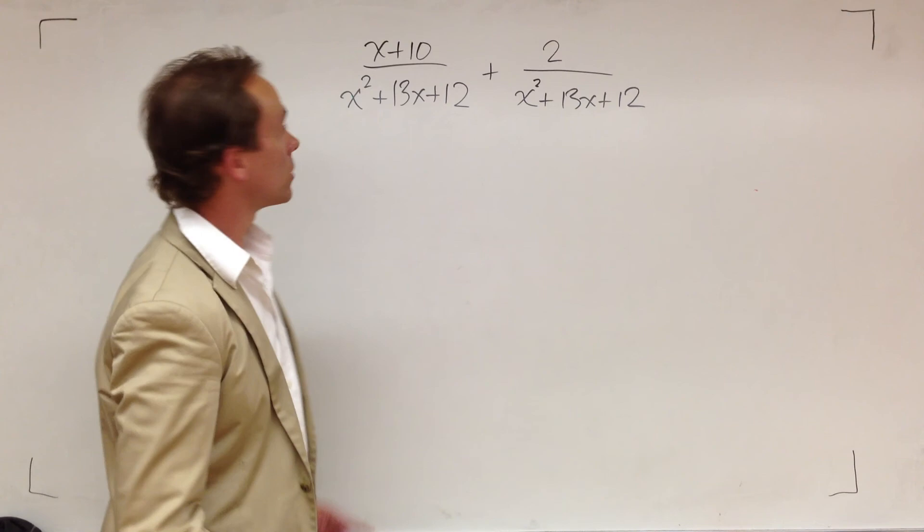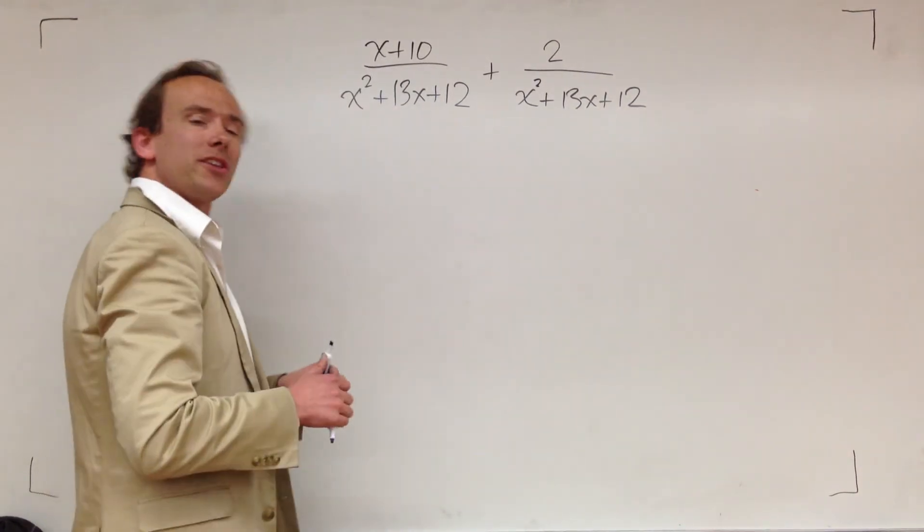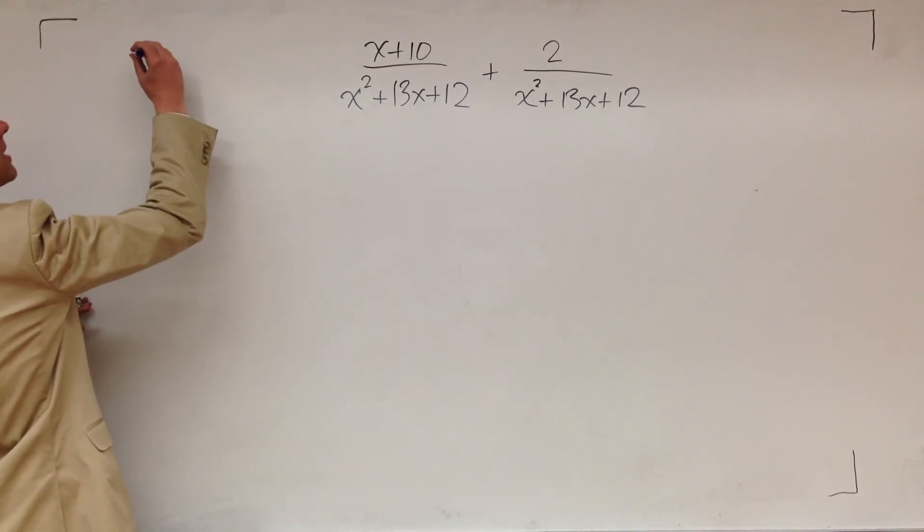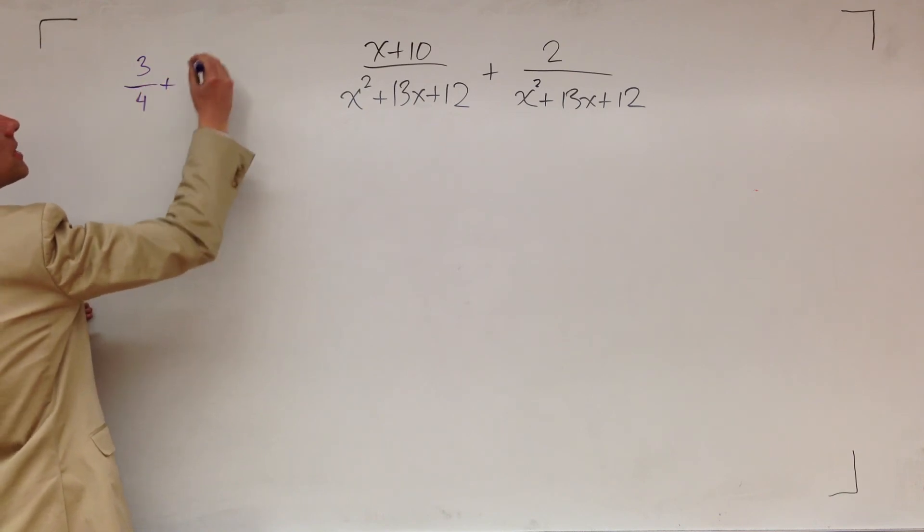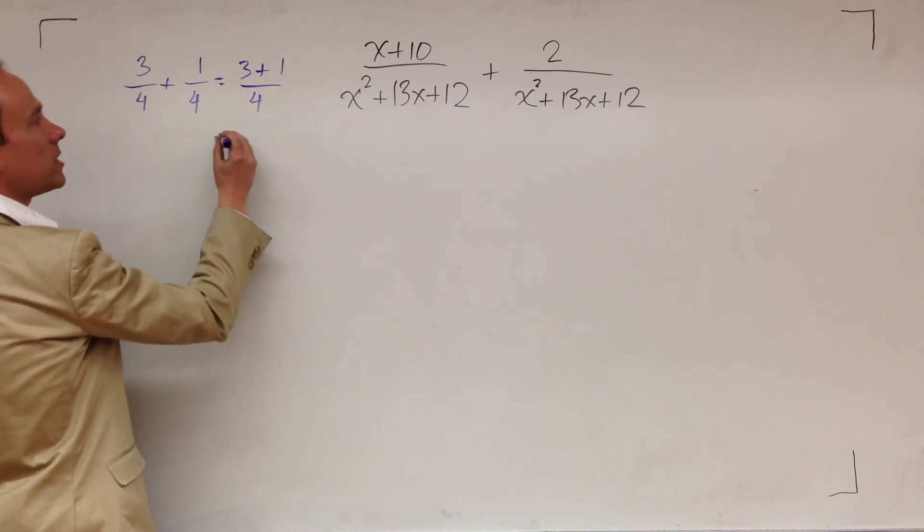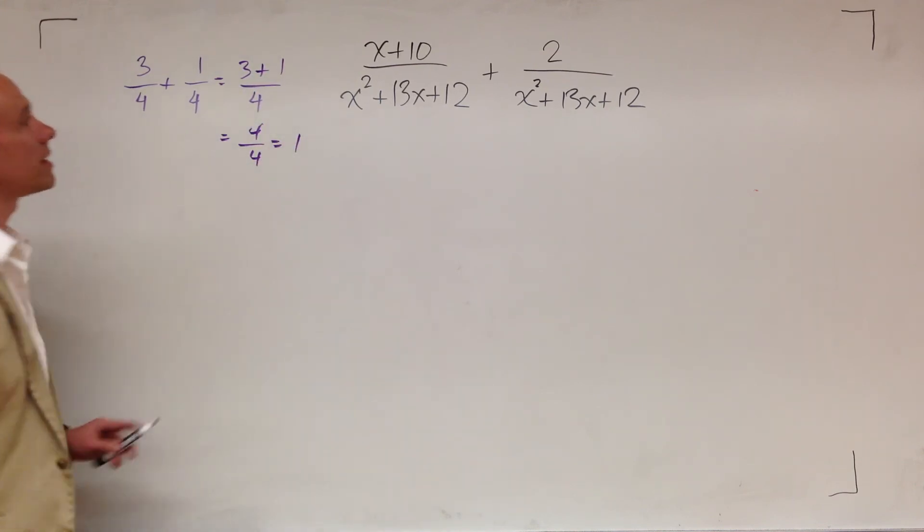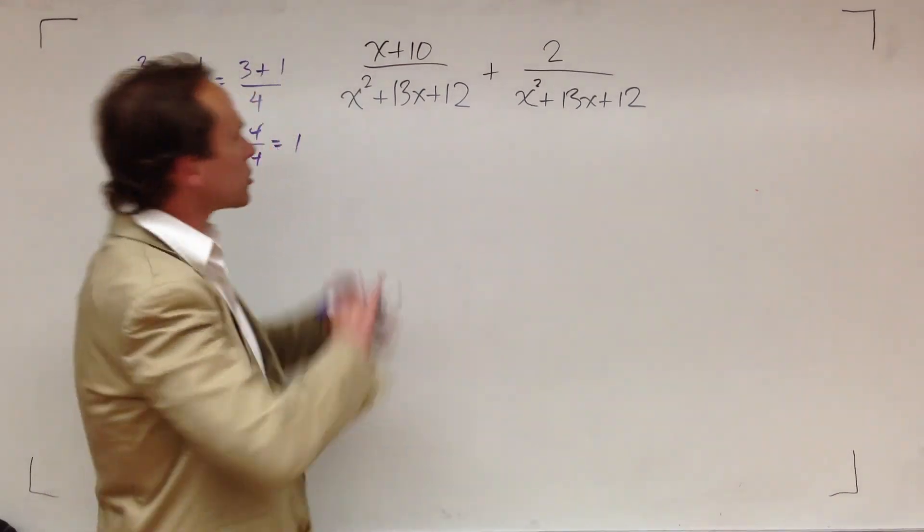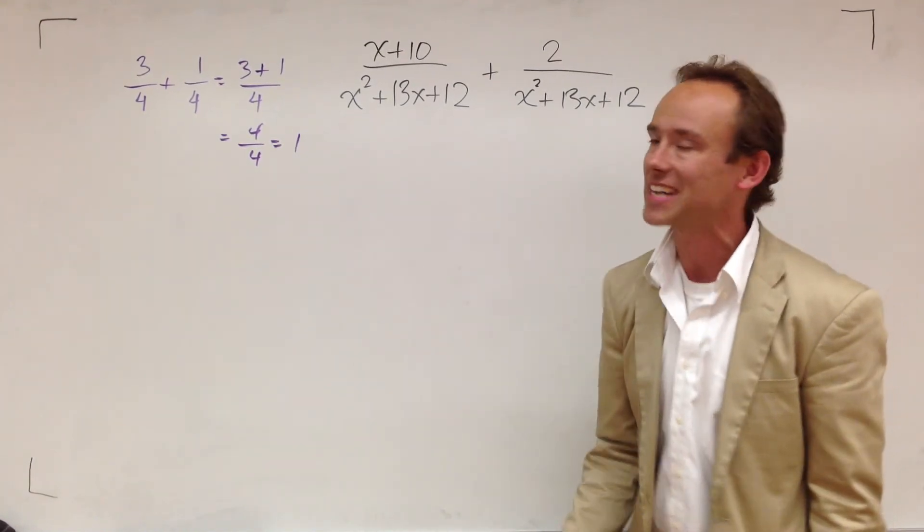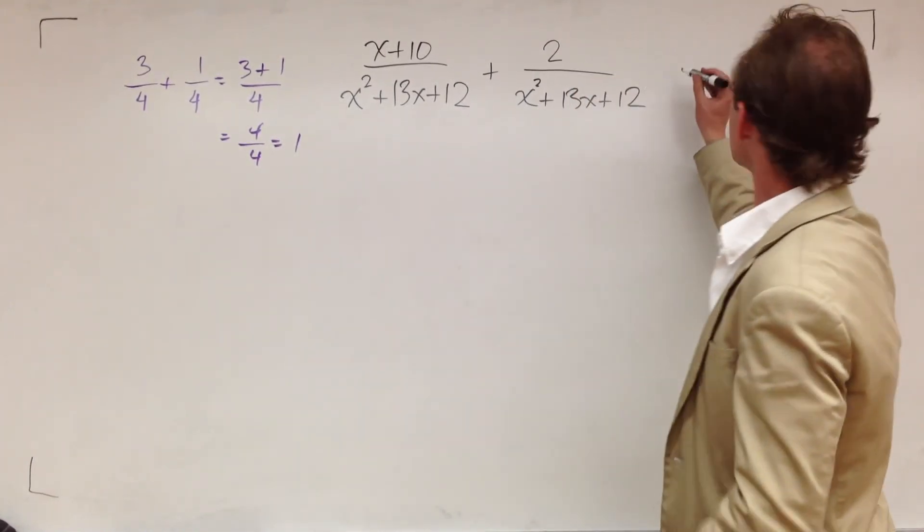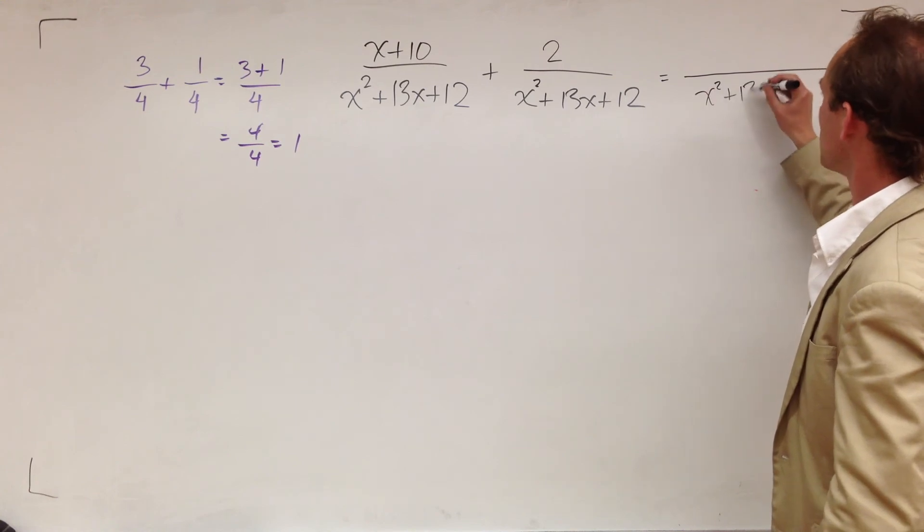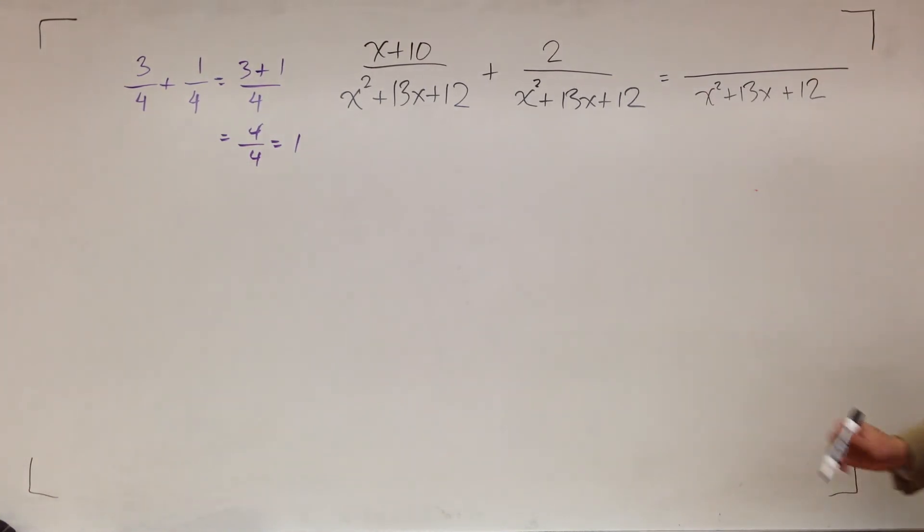Alright, let's do this. Remember, they got like terms. So it ain't no different than this example I'm making up off the top of my head. It's no different than 3 over 4 plus 1 over 4 equals 3 plus 1 over 4. That's 4 over 4, which you'd simplify to 1. But this problem is the same type of deal. So go get the easy part of this problem, which is this denominator that's not changing. We'll start right here. This gives us 13x plus 12.